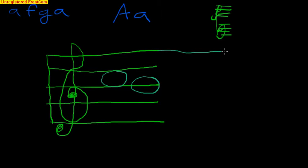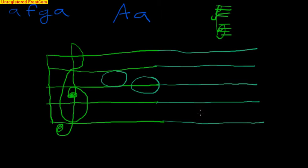And each of these lines and spaces, every space and every line counts as a note. And the way that we start to remember them is the spaces go F, A, C, E, ascending.